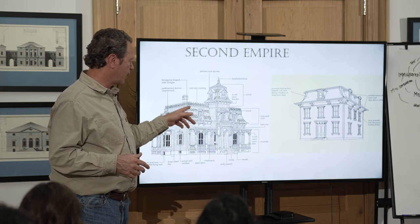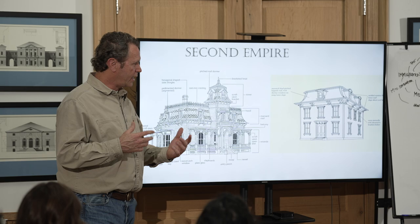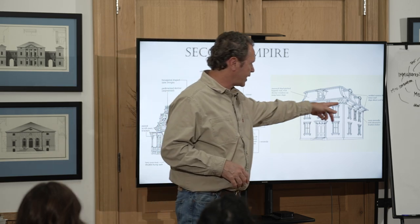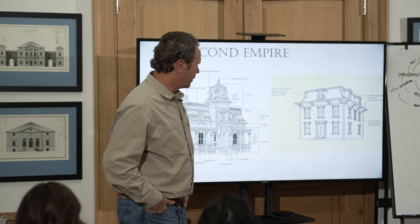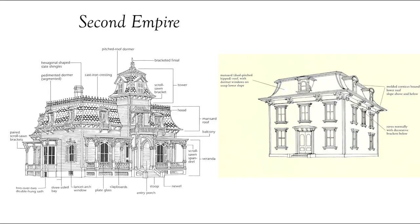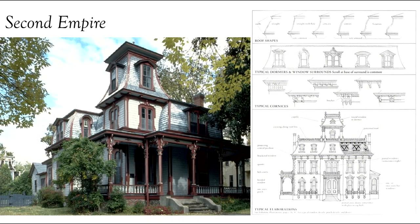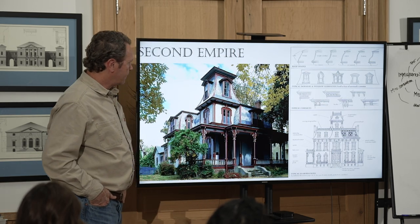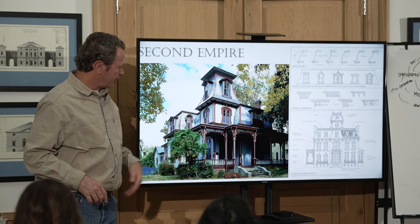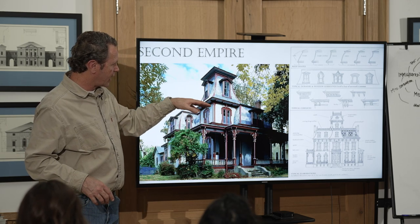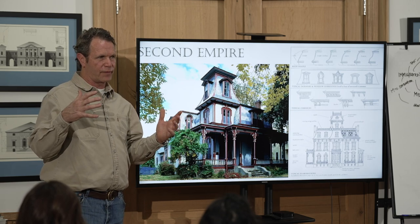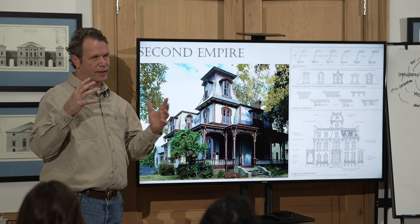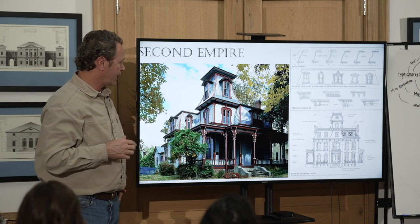Second Empire — in school we were always told to identify it by the mansard roof. You might think it's Italianate, but if you've got the mansard roof, it's Second Empire. Mansards come in different forms: convex, concave, straight, or S-curves. Towers and turrets are really part of the Victorian era all the way through — you think of the Queen Anne's with their turrets.